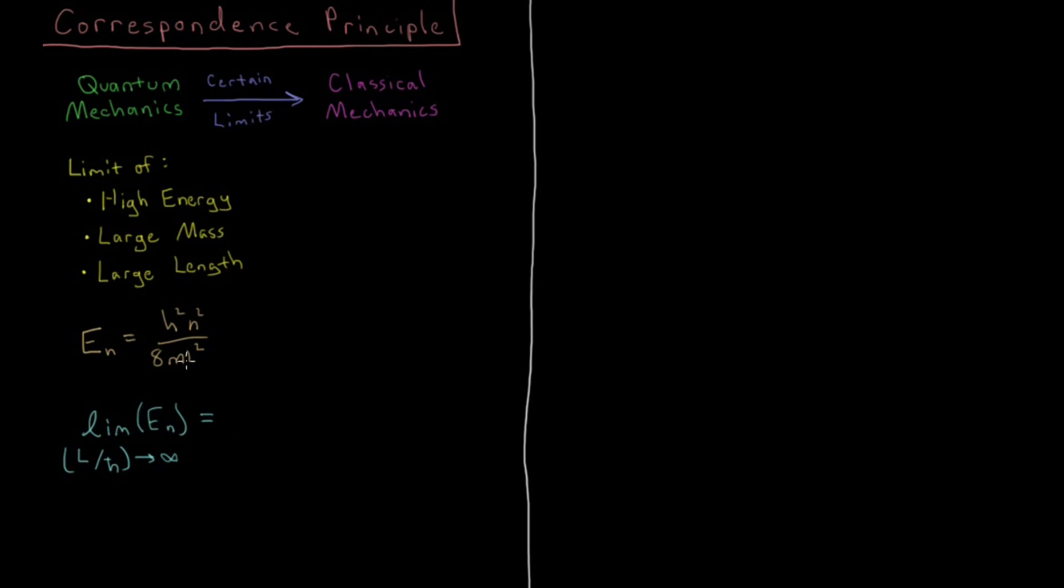So basically, as we get to very large length scales relative to Planck's constant, what happens to our quantization? Well, if L approaches infinity relative to h, then this energy quantity is going to approach zero. So at very large length scales, quantization and translational motion is going to go away. Our particle can be anywhere at once in the box at any point in time if it is a very large box relative to these subatomic length scales here dictated by Planck's constant.